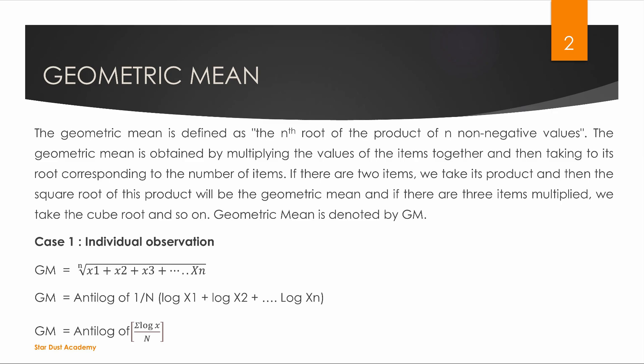We have a basic idea of the definition. The geometric mean — we can define the geometric mean. GM is equal to the nth root of x1 times x2 times x3 times xn.